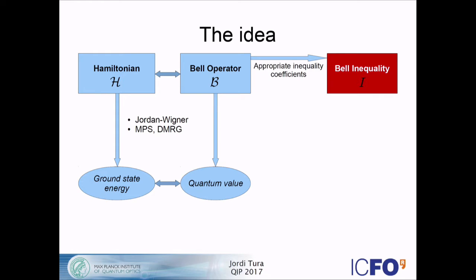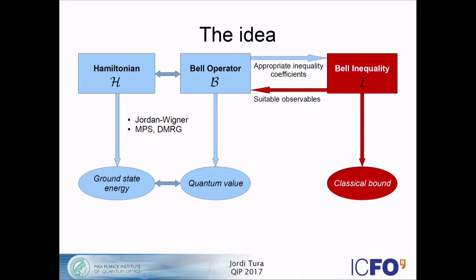The method also works in the other direction: I can start with a Bell inequality and produce a Hamiltonian by picking suitable observables. Then, of course, the Bell inequality that I get still requires work — I don't know what its classical bound is. I will have all the coefficients of the Bell inequality, but I will need the classical bound. I'm going to use a technique called dynamic programming to achieve this. By comparing the quantum value and the classical bound, if one is bigger than the other, I will know there are Bell correlations in the ground state of the Hamiltonian.